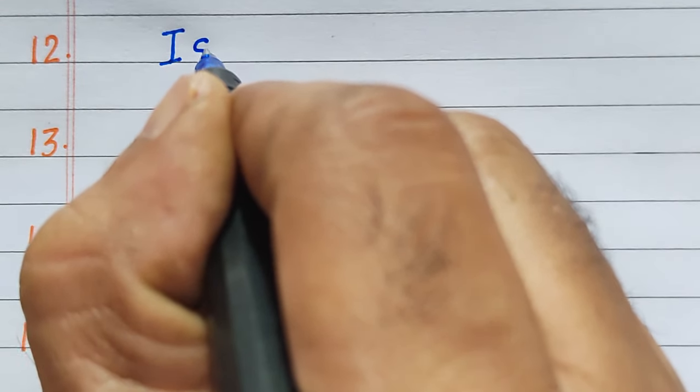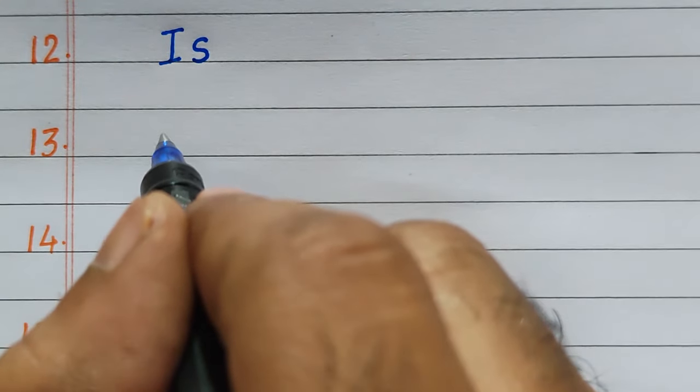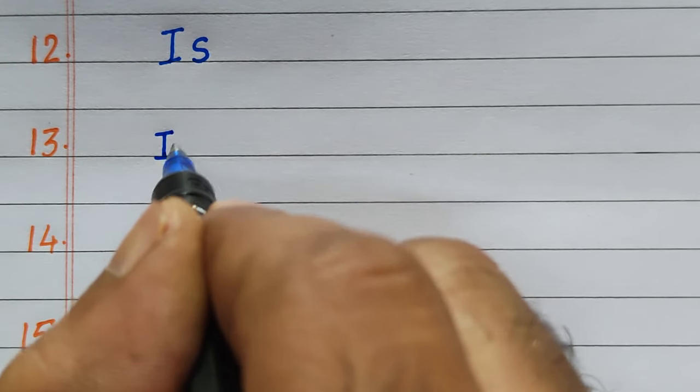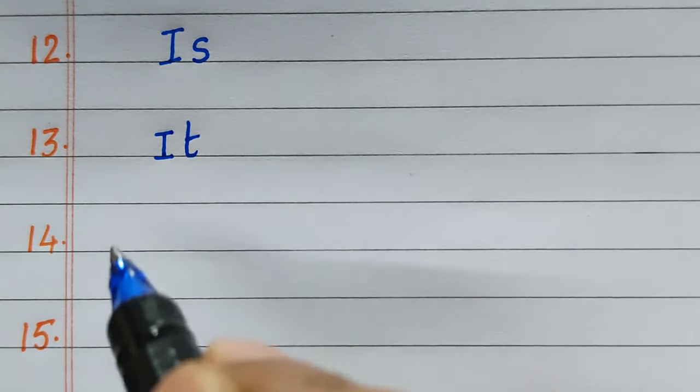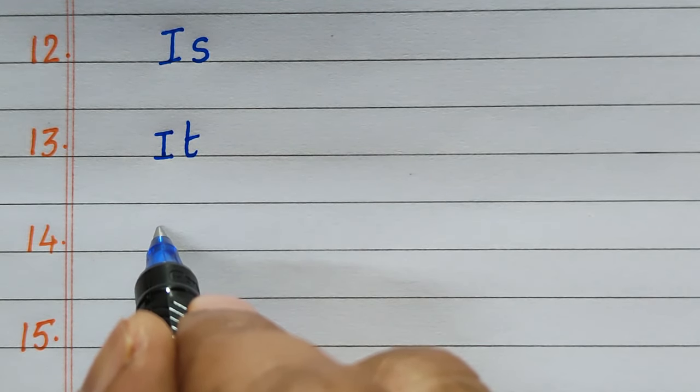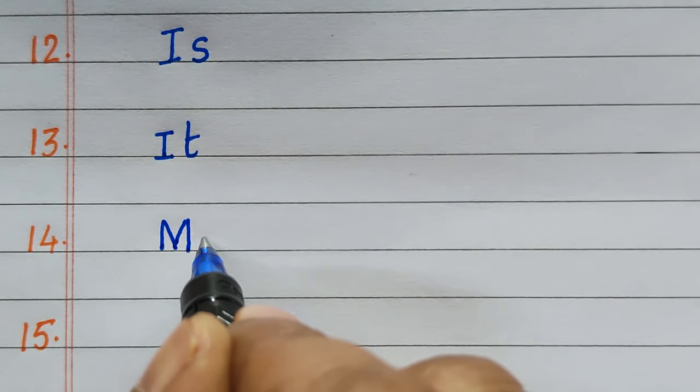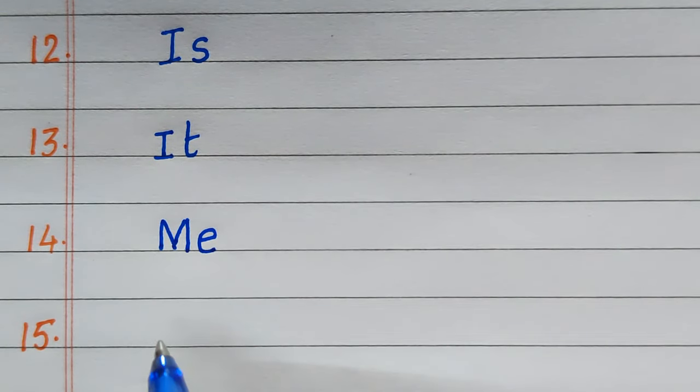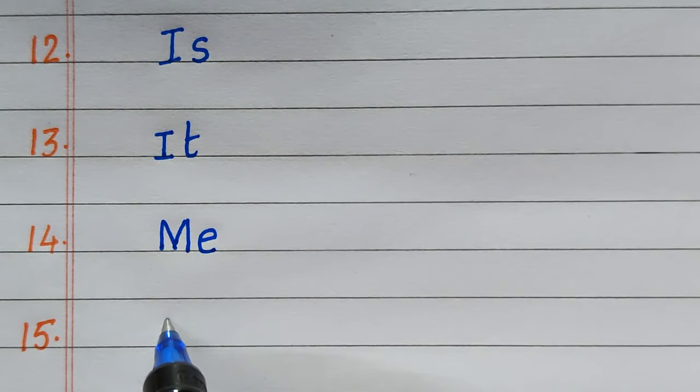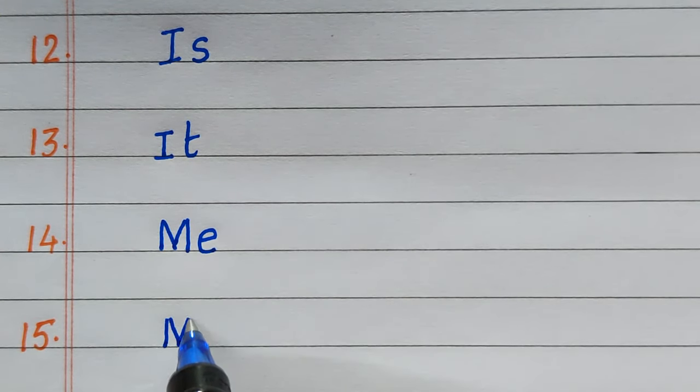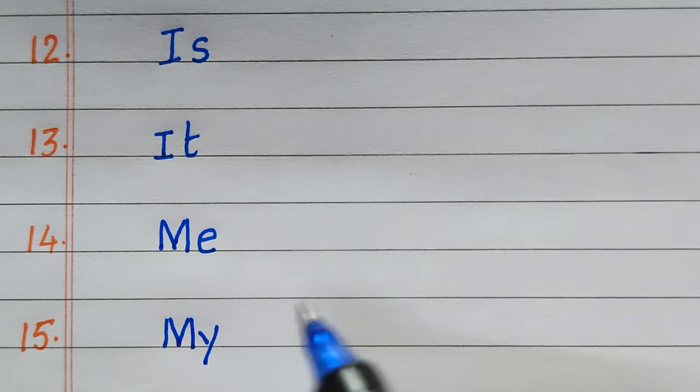Twelfth two-letter word is IS. Thirteenth two-letter word is IT. Fourteenth, ME. Fifteenth, MY.